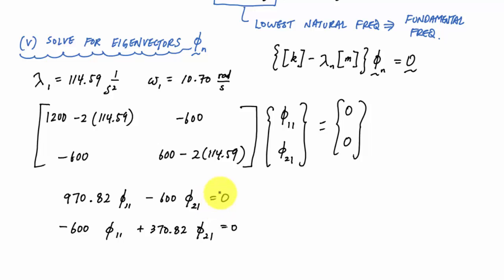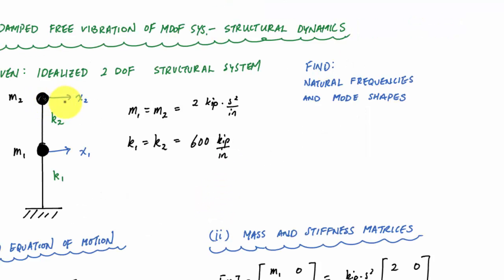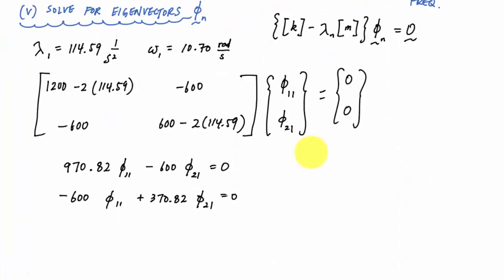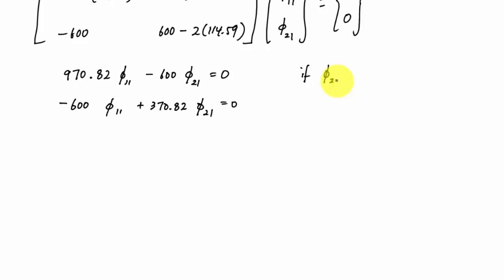A common thing to do is set the displacement or mode shape modal displacement to a value of one. So if phi two, story location two mode one, equals one, and if I plug that into any of these equations, I'll be able to solve for phi one one.